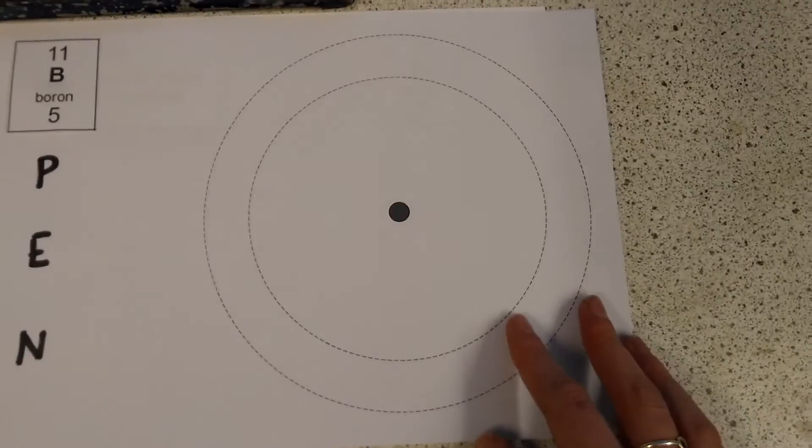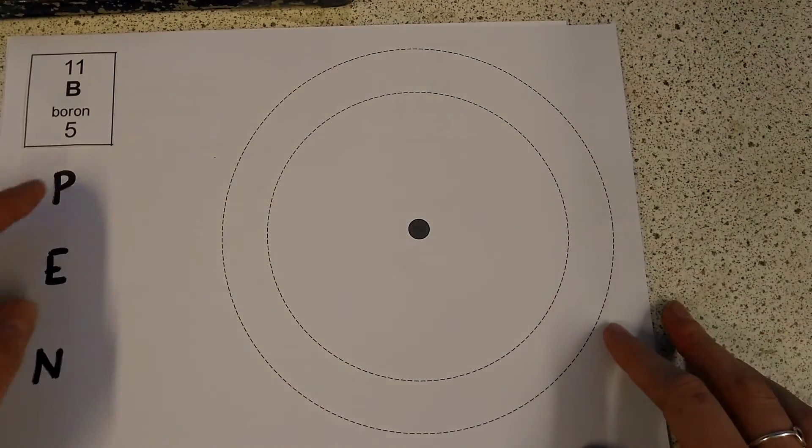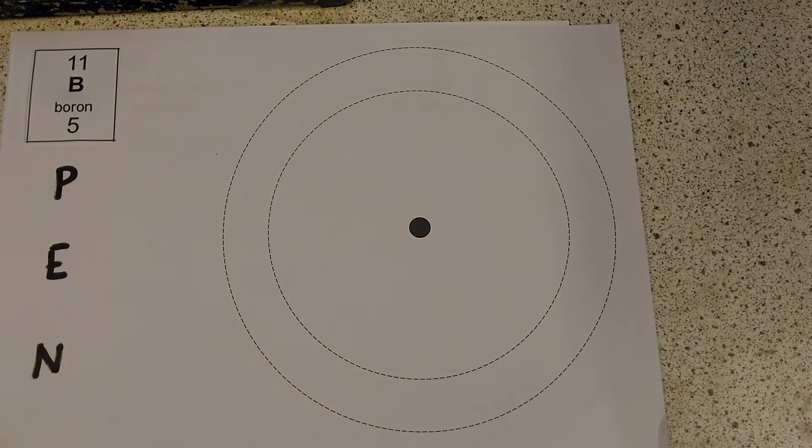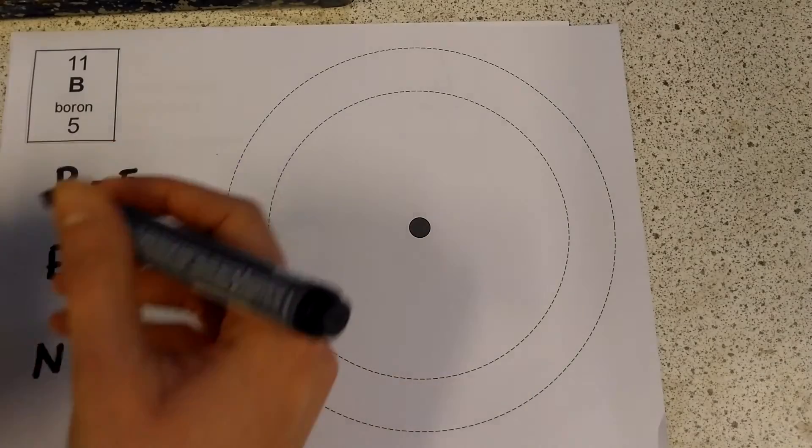Let's look at boron. So we're going to do exactly the same thing we did before. We're going to start with our atomic number or our proton number. So if our proton number is 5, that means that we have 5 protons. Nice and straightforward.